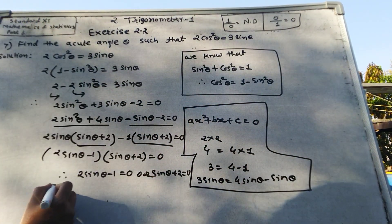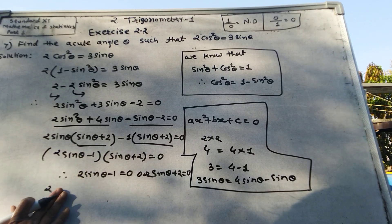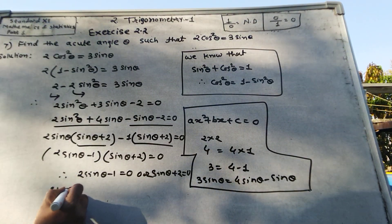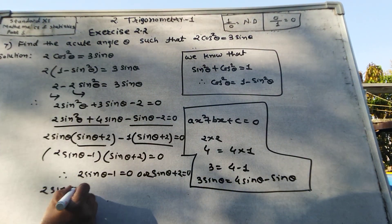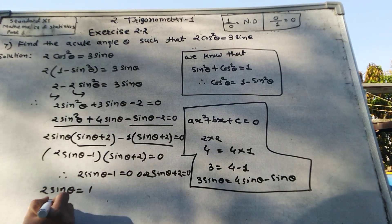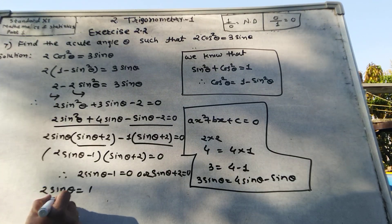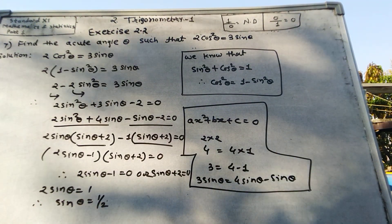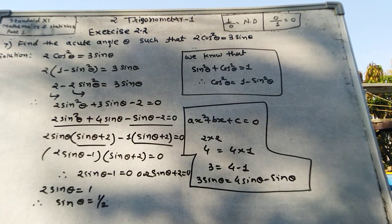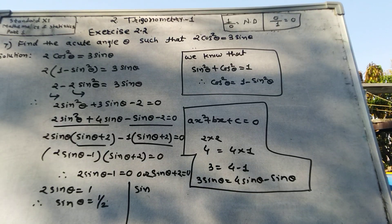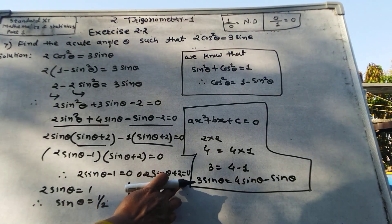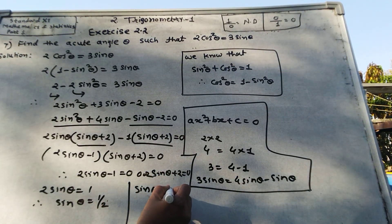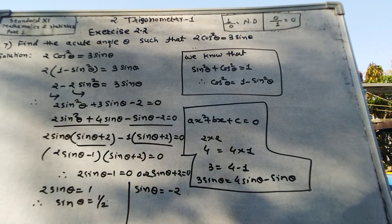Setting each factor to zero: From 2 sin theta minus 1 equals 0, we get 2 sin theta equals 1, so sin theta equals 1/2. From sin theta plus 2 equals 0, we get sin theta equals negative 2.